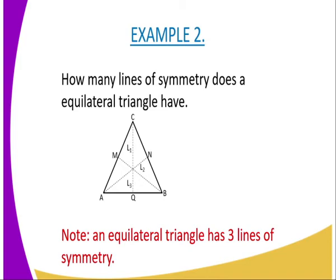And therefore, we can conclude and say that an equilateral triangle has three lines of symmetry.